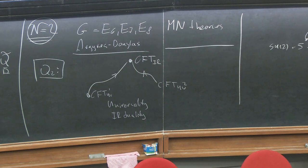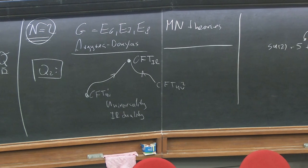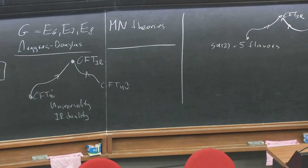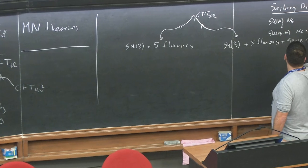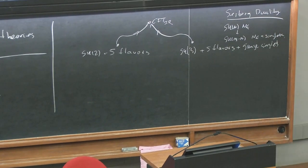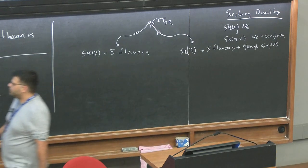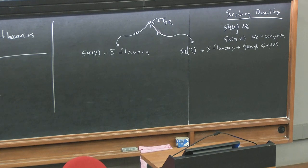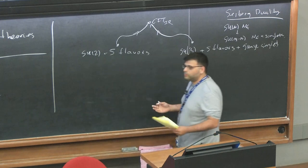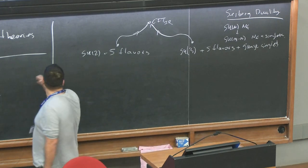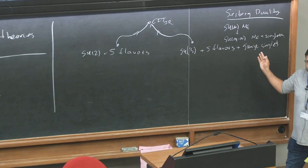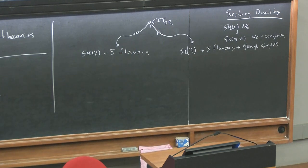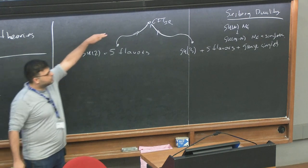Most of these types of dualities were discovered by Seiberg and collaborators 20 years ago, relating SU(N) gauge theories with N_F flavors to SU(N_F − N) gauge theories with N_F flavors and some singlets. This raises the question: what are the universality classes of flows? Starting from two different theories in the UV, is there a way to know they should flow to the same fixed point? Is there a mechanism or algorithm to tell us that?